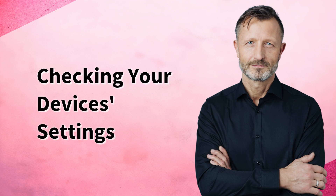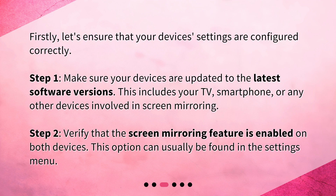Checking your device's settings. Firstly, let's ensure that your device's settings are configured correctly. Step 1: Make sure your devices are updated to the latest software versions. This includes your TV, smartphone, or any other devices involved in screen mirroring. Step 2: Verify that the screen mirroring feature is enabled on both devices. This option can usually be found in the settings menu.